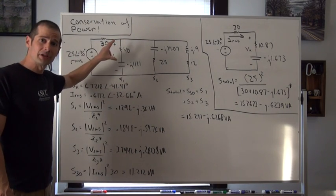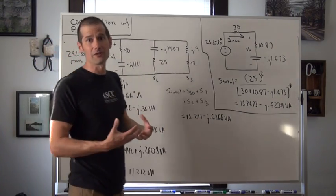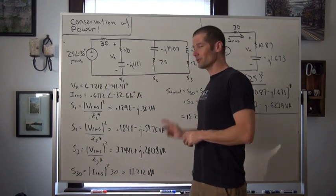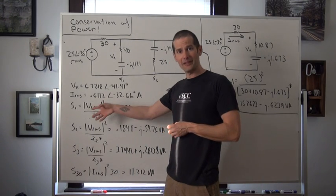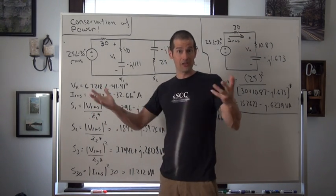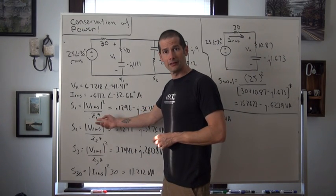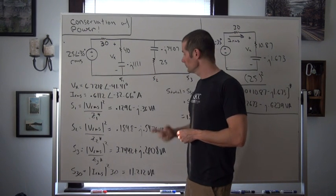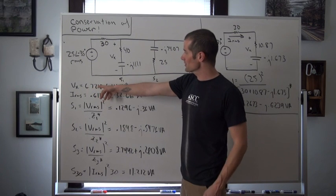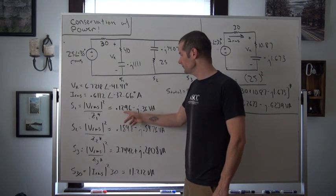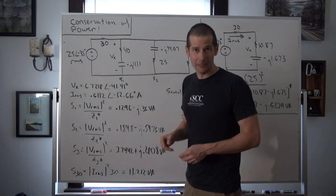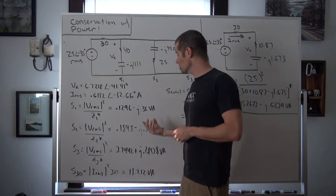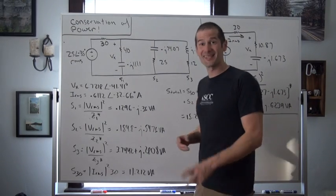Knowing this voltage and this current, we can do the calculations for each complex power within the circuit. For S1, S2, and S3, those calculations are super easy because we have that RMS voltage — we take its magnitude, square it, and divide by the conjugate of the impedance. For S1, considering 40 minus j111.1 ohms, we take 6.72 squared and divide by the impedance, and we get 0.12196 minus j0.36 volt amperes. This makes sense because we have a resistive-capacitive branch, which should give us a negative reactive power — and sure enough, that's exactly what we get.